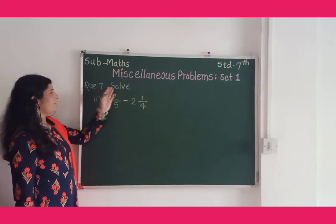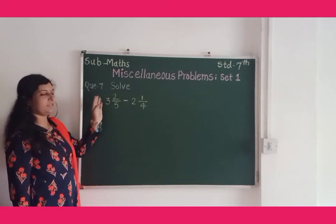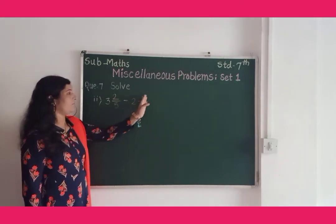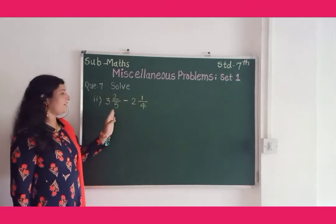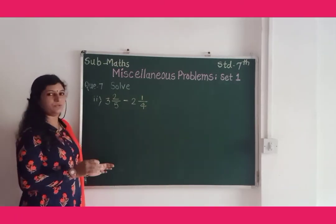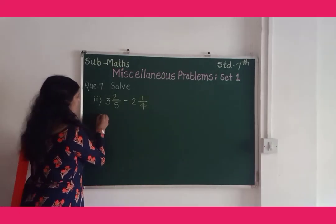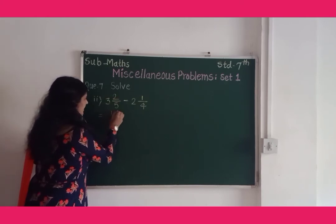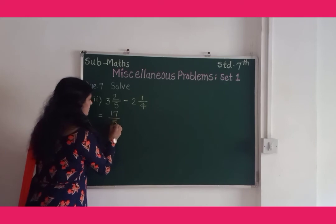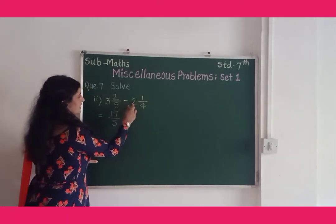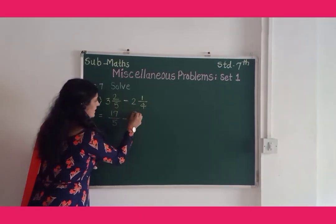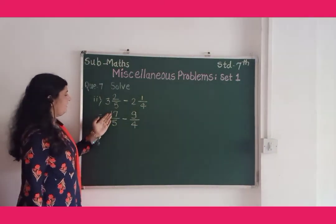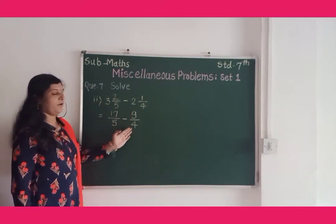Question 7: we take the second example from this question: 3 and 2 upon 5 minus 2 and 1 upon 4. First we convert this mixed fraction into an improper fraction. So here 5 into 3 is 15, 15 plus 2 is 17 upon 5, minus 4 into 2 is 8, 8 plus 1 is equal to 9 upon 4. Now here we have 17 upon 5 minus 9 upon 4.